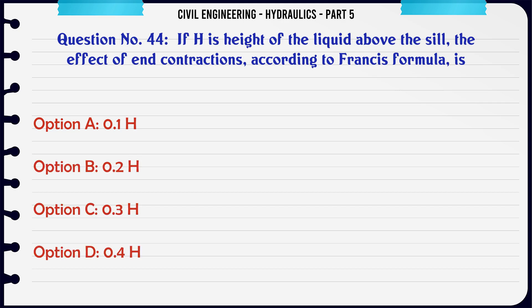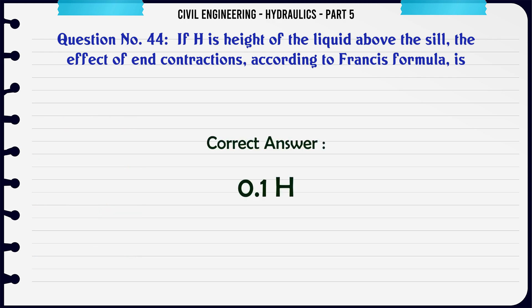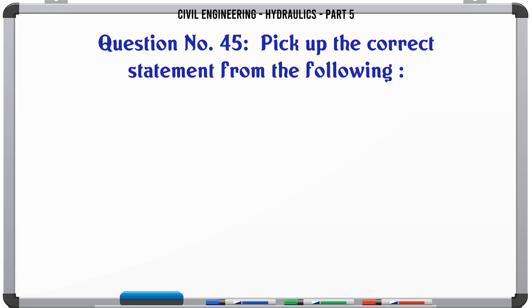If h is the height of the liquid above the sill, the effect of end contractions according to Francis formula is: A. 0.1h, B. 0.2h, C. 0.3h, D. 0.4h. The correct answer is 0.1h.